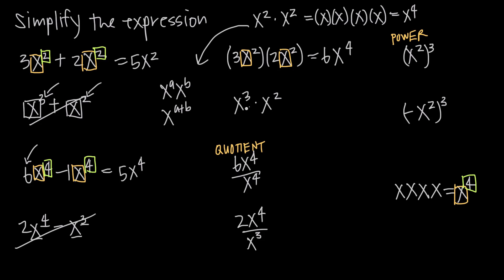Here's another example: x to the third times x squared. Remember, there's an implied 1 coefficient in front of both of these. When we multiply 1 times 1, we get 1, so there will be an implied 1 coefficient on our final answer. Both have a base of x, so we can multiply them. x to the third times x squared equals x to the 3 plus 2, so we get x to the fifth. That should make sense because we have 3 factors of x multiplied by 2 factors of x, giving us 5 factors of x total — x to the fifth.